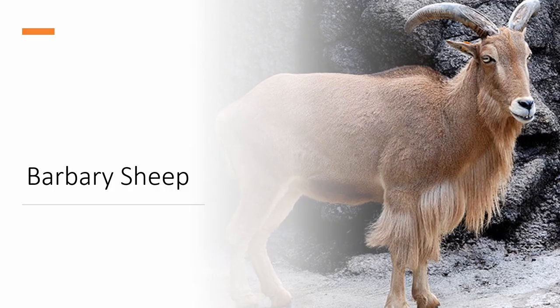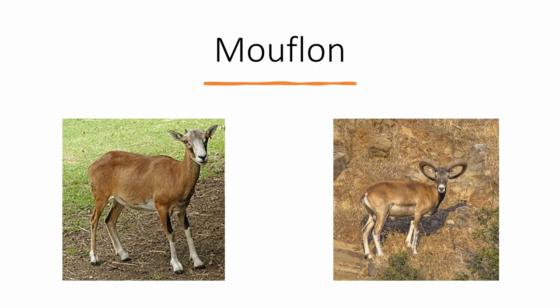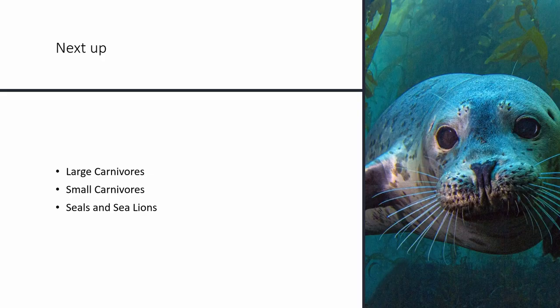We'll finish off with some introduced species. The Barbary sheep, originally from North Africa, has been introduced to Texas, California, and New Mexico. It's very easily identifiable by its long mane and yellow-brown coloration, as well as its upright outward-facing horns. The mouflon is the species that sheep were domesticated from, originally from Europe and the Middle East, introduced to Texas. The male has distinctive horns that face outwards and come back around behind the head. The female lacks horns altogether, which separates it from any other species of sheep or goat in this area.